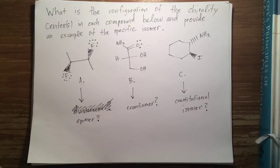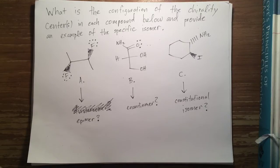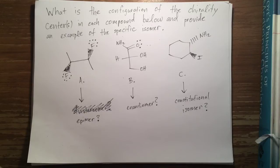Let's say your professor gave you this problem and you had no idea how to solve it. The way you start is by looking at it, reading it, and identifying certain things about it. The problem says: what is the configuration of the chirality centers in each compound below, and provide the example of the specific isomer.